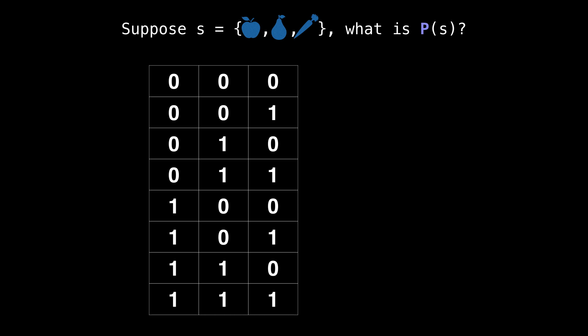If you know binary, all I have done is simply enumerate all the numbers from zero to seven inclusive on the screen. As a sanity check, you can also make sure that there are exactly 2^3 bit strings. And indeed, there are.